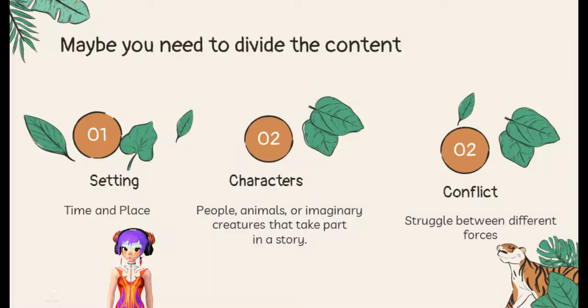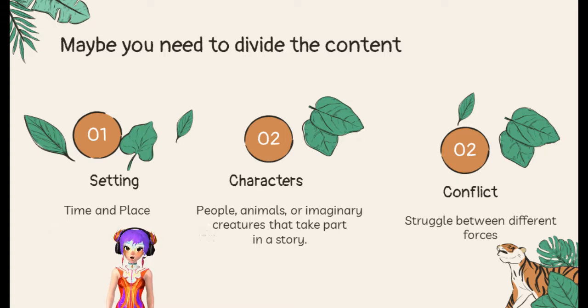So, in any video game, or in any story, or in any plot, we have three key elements. We have the setting, we have the characters, and we have a conflict that is part of the plot.